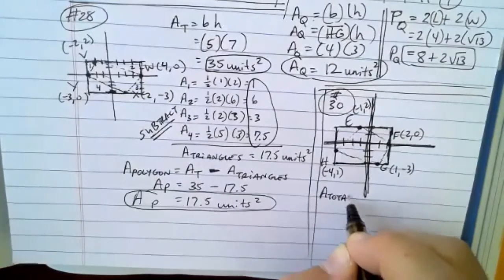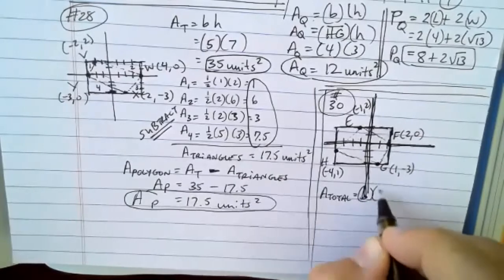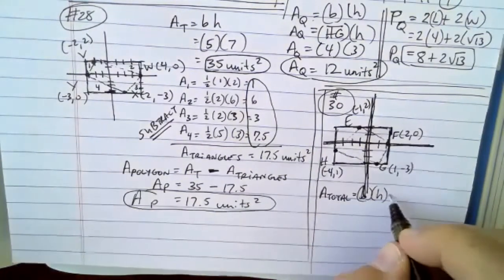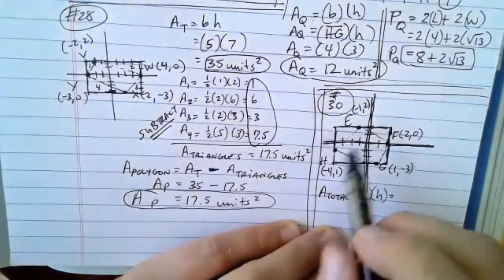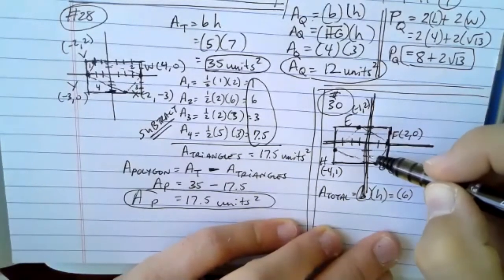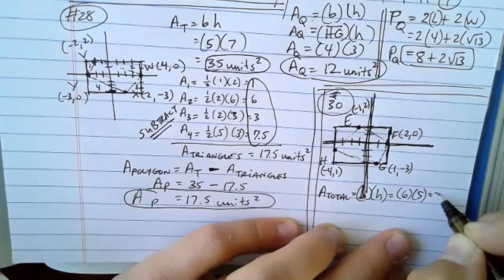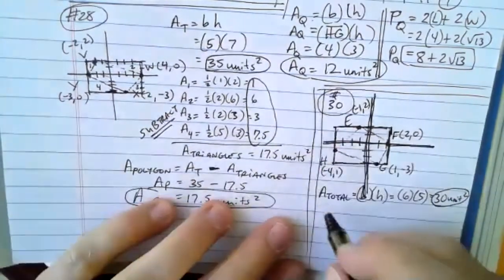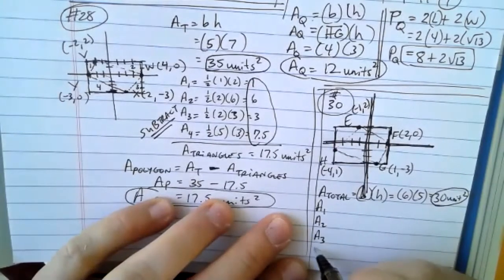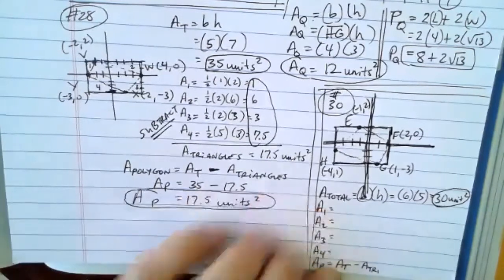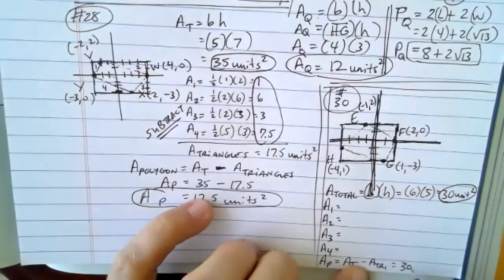The area of the bounding rectangle is easy to find — it's base times height. Counting: the base is six units and the height is five units, giving a total of 30 units squared. The answer will be less than 30. I'll label the four corner triangles one through four and use the formula: area of polygon = area of total rectangle minus area of the triangles.